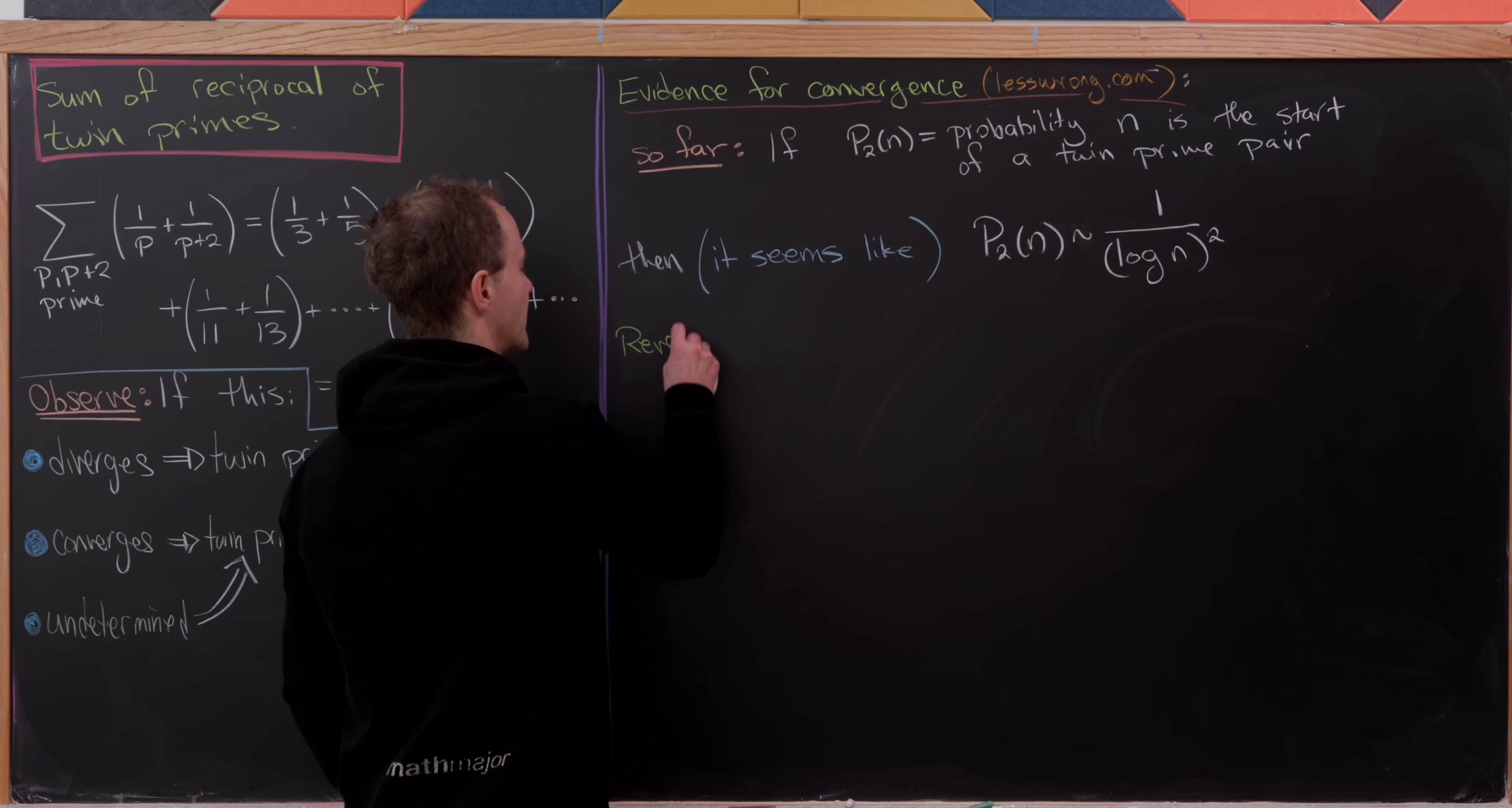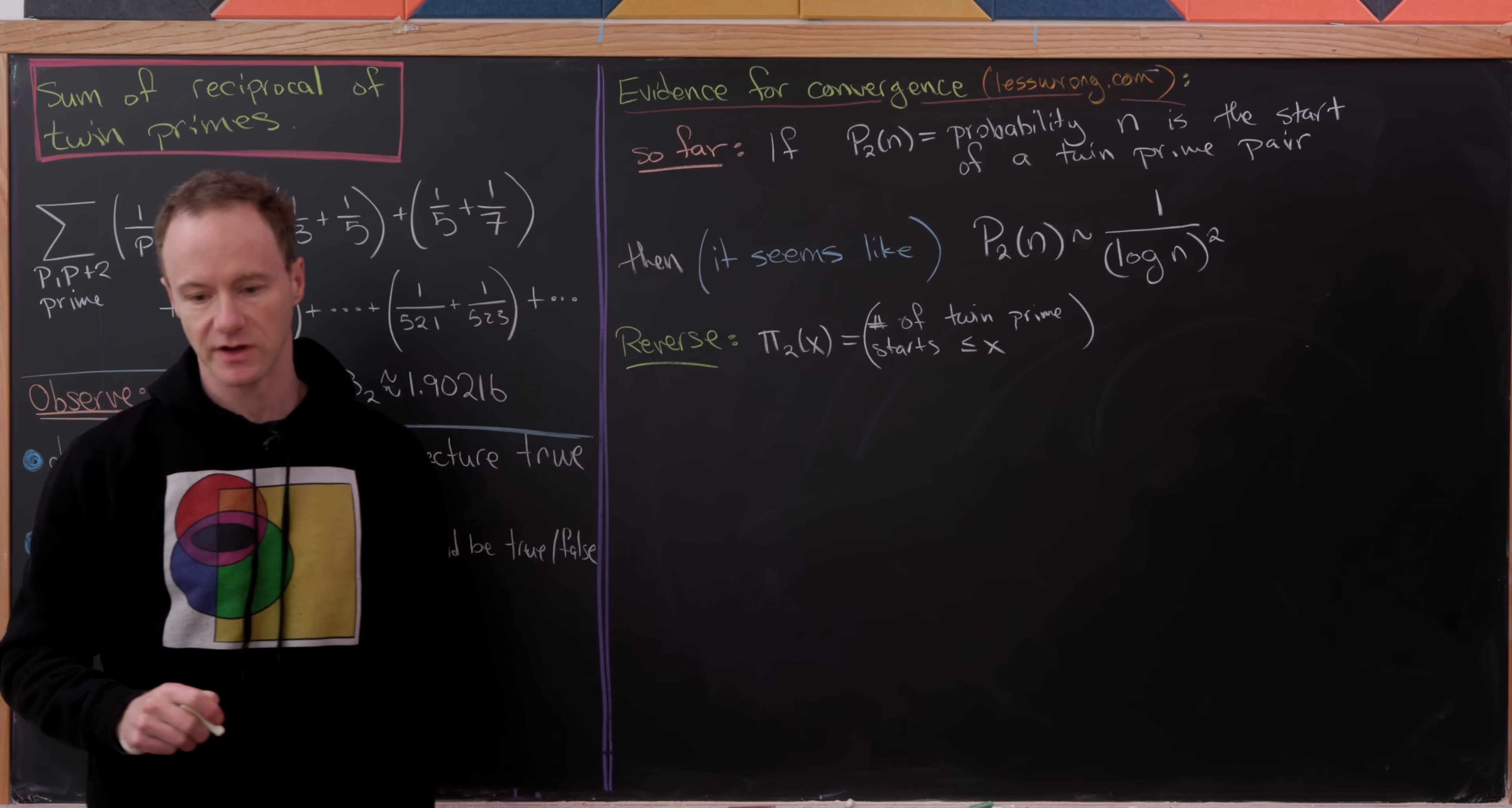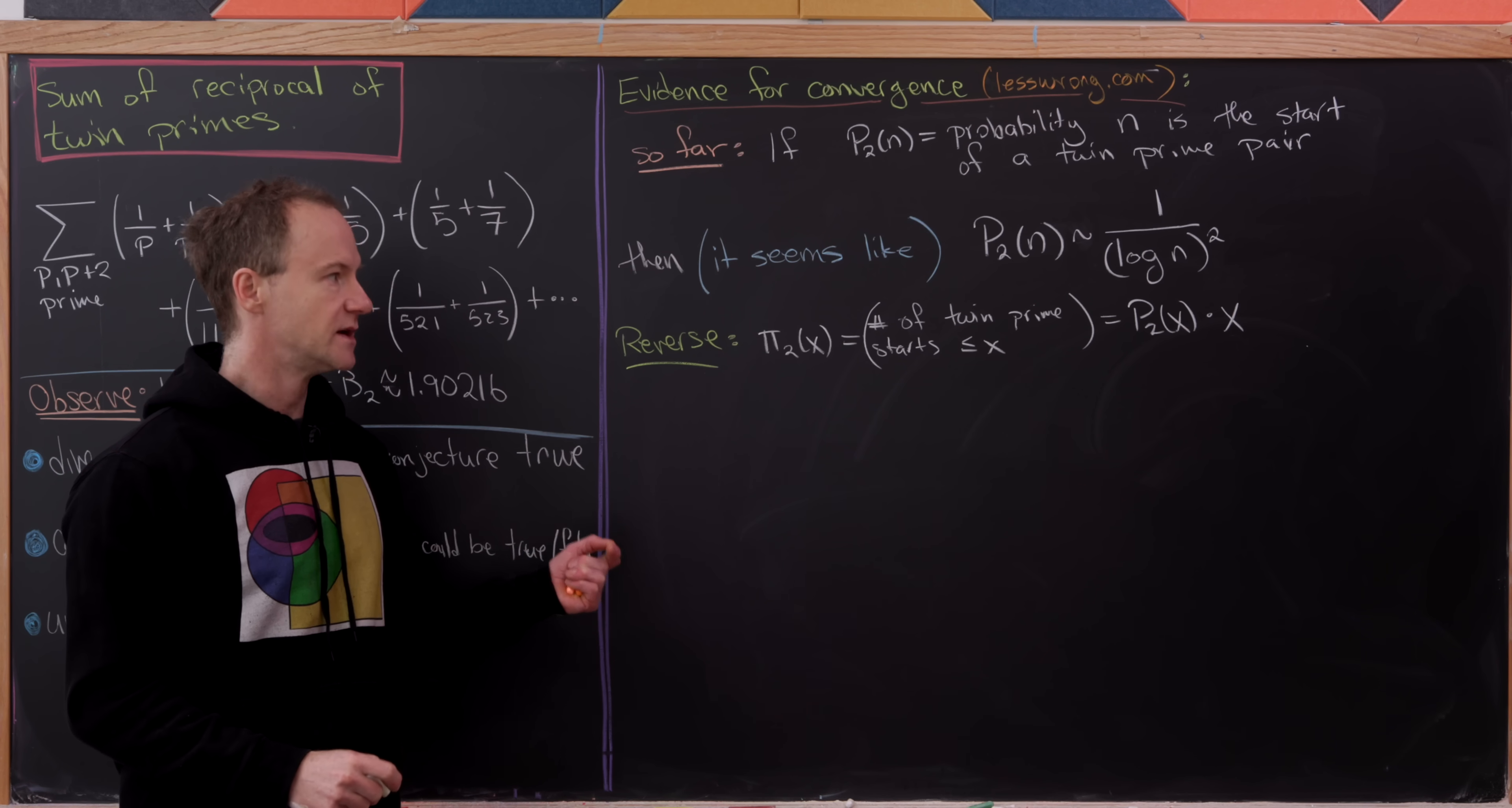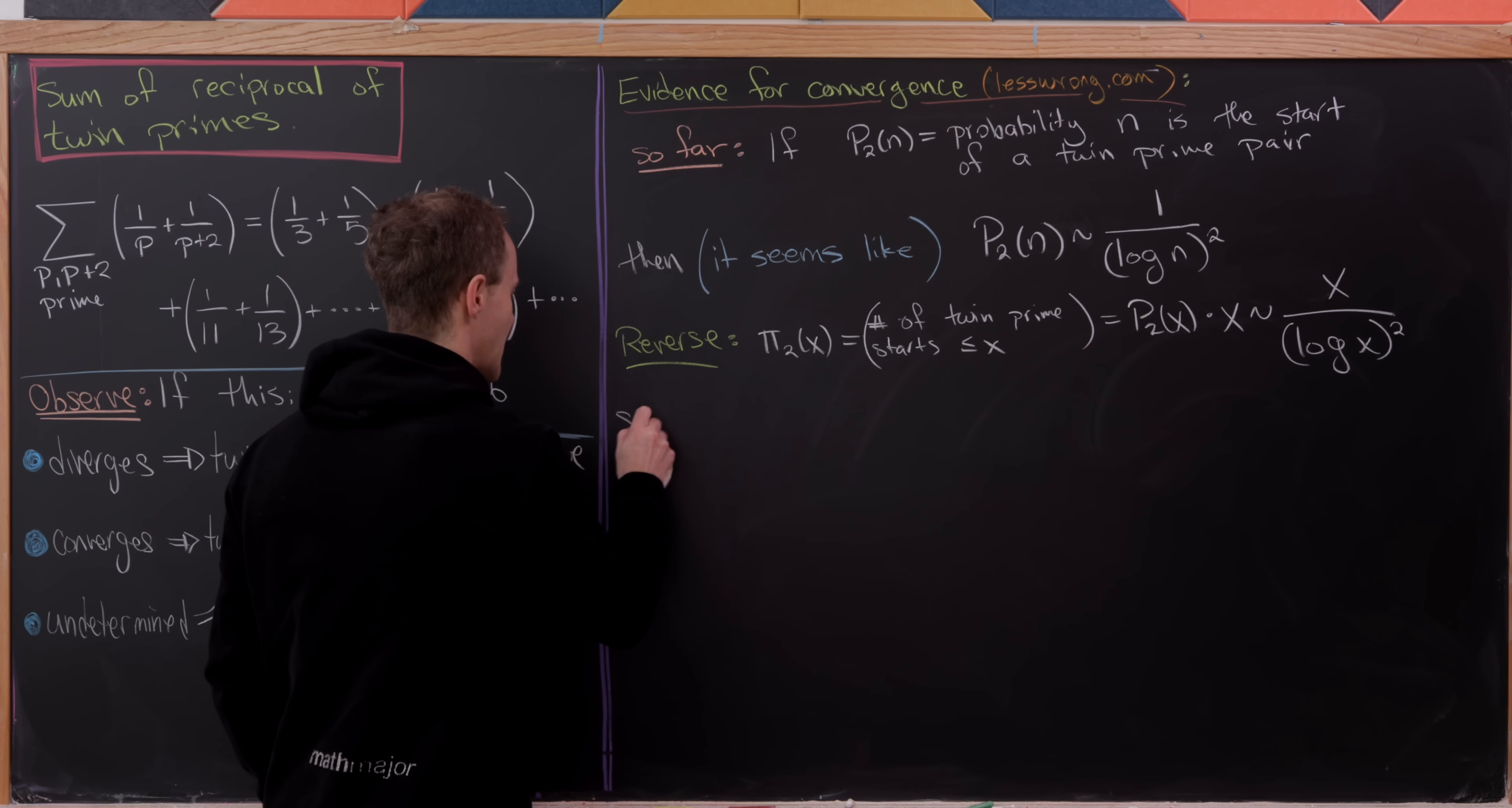So now from here we will reverse this probability into a twin prime counting function. So here we've got π sub 2 of x is equal to number of twin prime starts less than or equal to x. But observe that that's going to be equal to P sub 2 of x times x. Because it's the probability that we encounter one times how many elements we have in that set. But then this is sort of, but then just using multiplication, this is going to be x over log of x quantity squared.